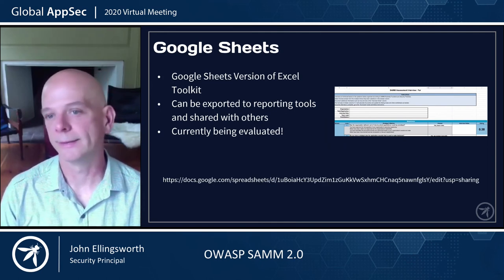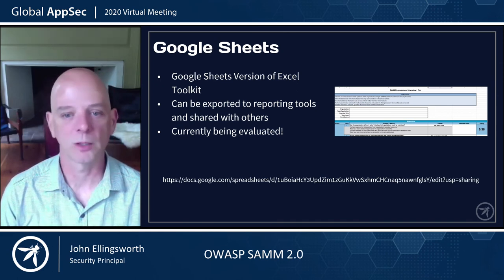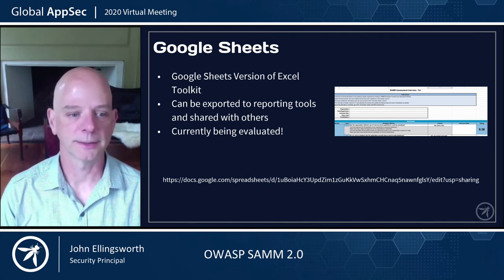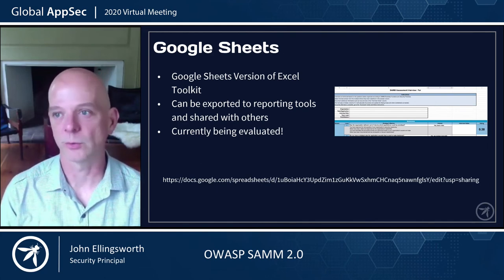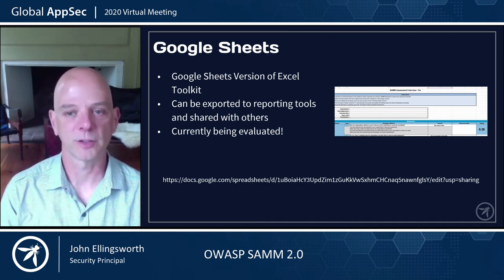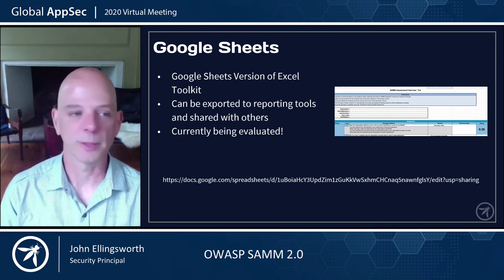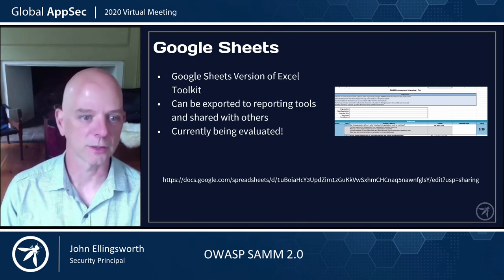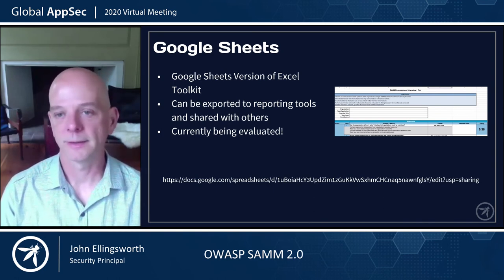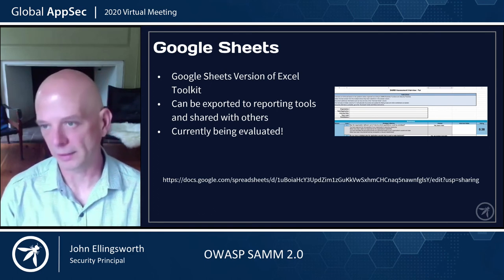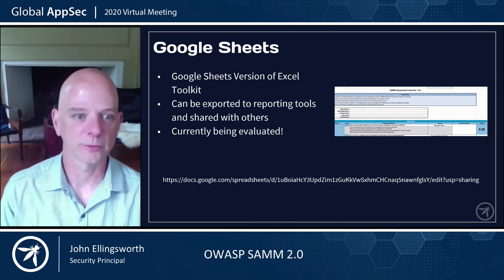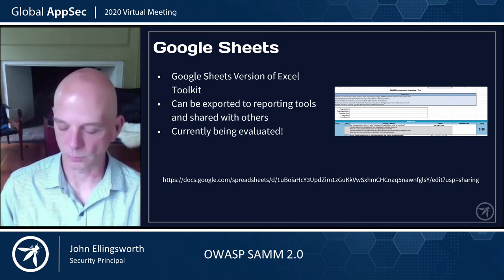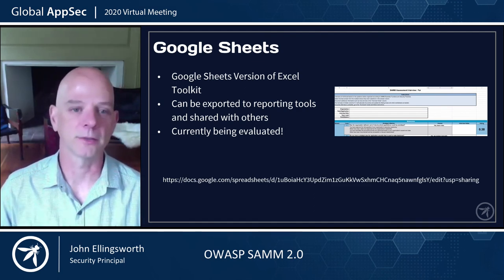The Google Sheets version was created by importing the Excel version into Google Sheets, and the compatibility was pretty good, though some fine-tuning is still needed to keep it in sync. We're working on automating the integration between Google Sheets and updates to the GitHub project, so that if assessment questions change, the Google Sheets version stays in sync automatically. It can be exported as an Excel file, used locally, or data can be exported to other reporting tools such as Google Data Studio or Tableau using their automated integration with Google Sheets.